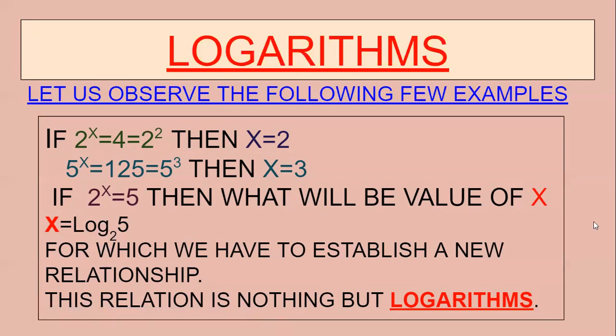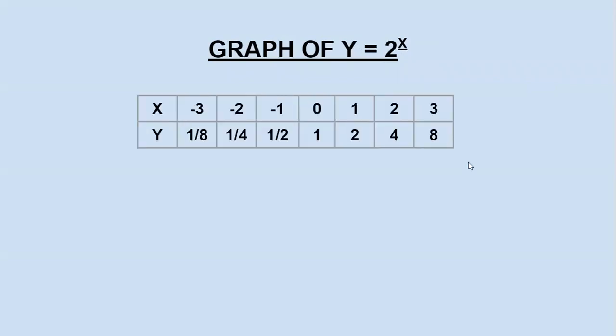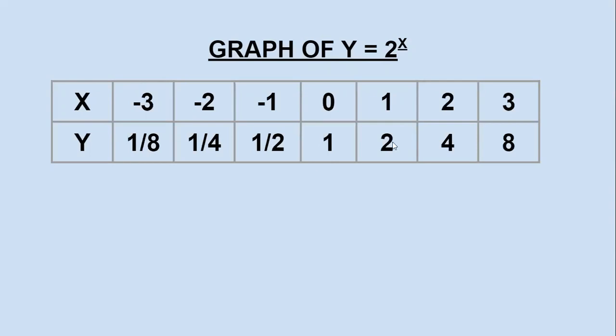Now we will move on to find the x value through a graph. We will work out a graph like y is equal to 2 to the power of x, and find what x will be when y is equal to 5. First we will take a table — x values will be like this, and y values will be like this. I will explain how we got these values in detail.